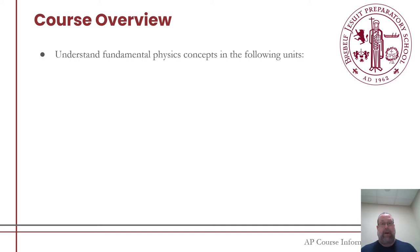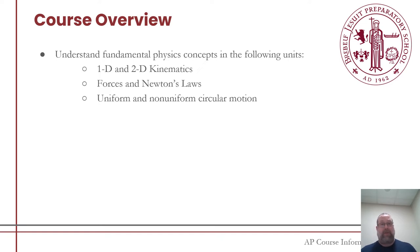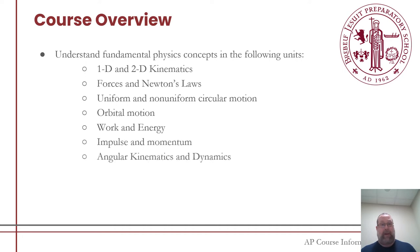Here are the units we are going to be covering in AP Physics 1. They include one-dimensional and two-dimensional kinematics, forces and Newton's laws — which is a huge section — uniform and non-uniform circular motion, orbital motion and gravity, work and energy, impulse and momentum, angular kinematics and dynamics, which is connected to circular motion, and finally oscillations and simple harmonic motion.